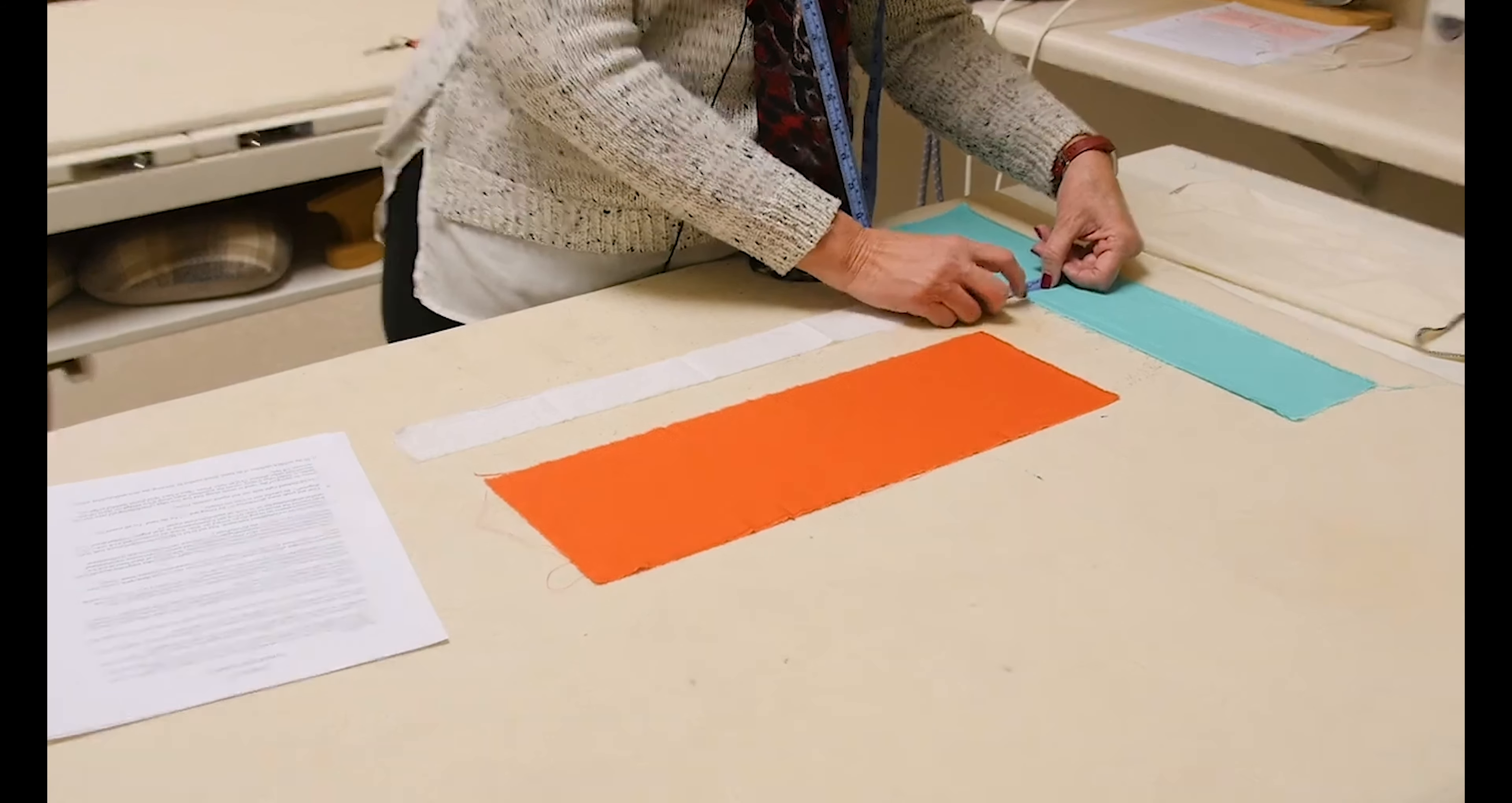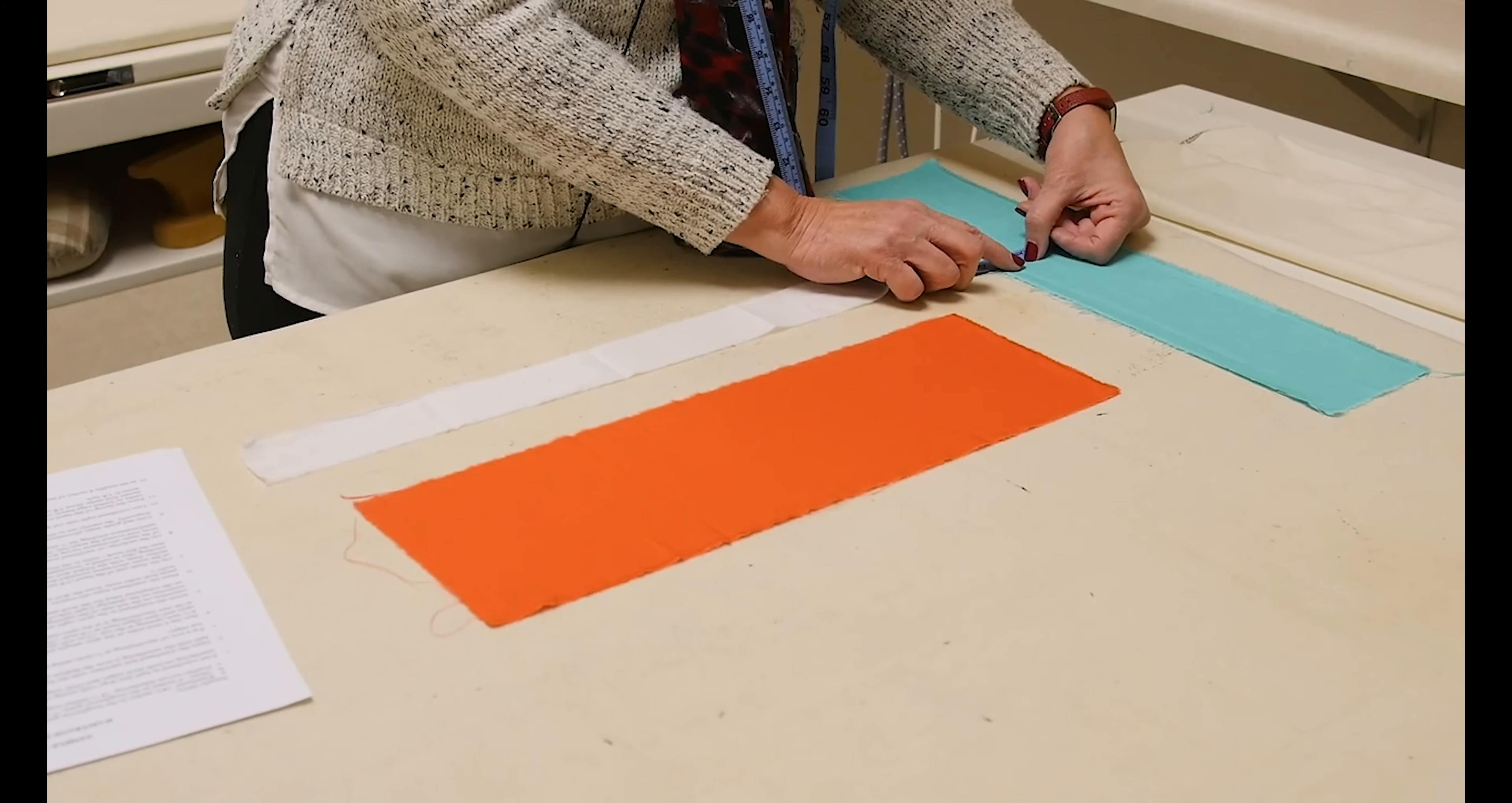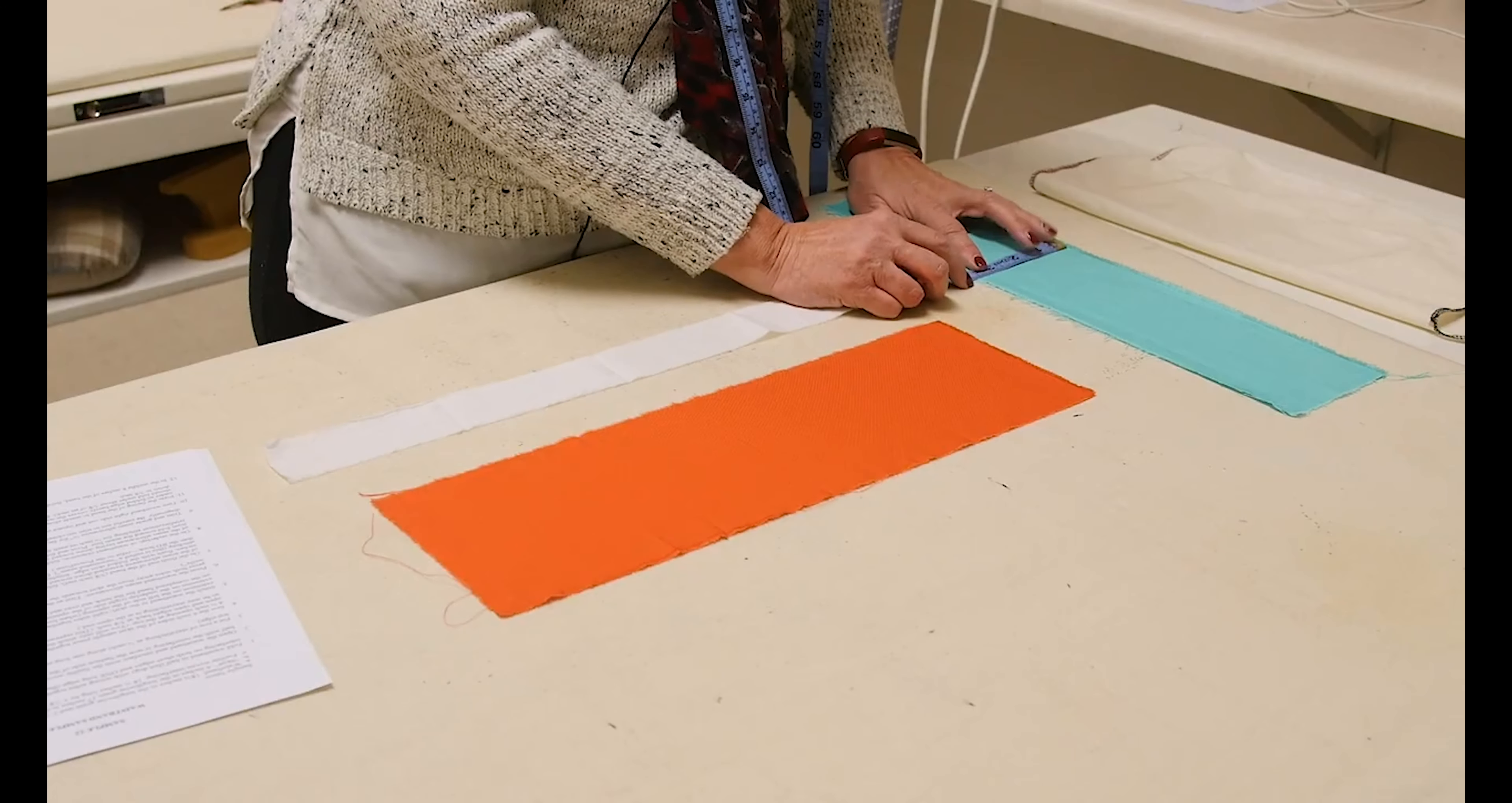And then we need two seam allowances. And two five eighths seam allowances is another inch and a quarter. So that's where we get the three and three quarters.